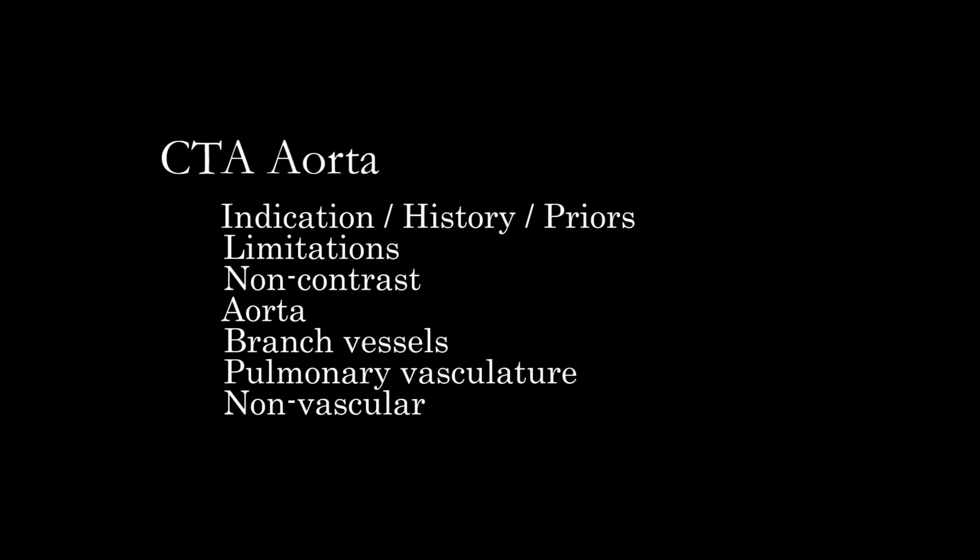To recap the approach to CTA of the aorta for acute pathology: review patient history and priors, assess study limitations, then go through the non-contrast phase looking for intramural hematoma — the hyperdense crescent or displaced intimal calcification. On the contrast-enhanced images, evaluate the aorta for dissection, pseudoaneurysm, and other pathology, then follow all branch vessels to the edge of the study, looking also for wall thickening and vasculitic changes. Finally, assess the pulmonary vasculature if contrast-filled, and evaluate non-vascular structures in usual fashion.